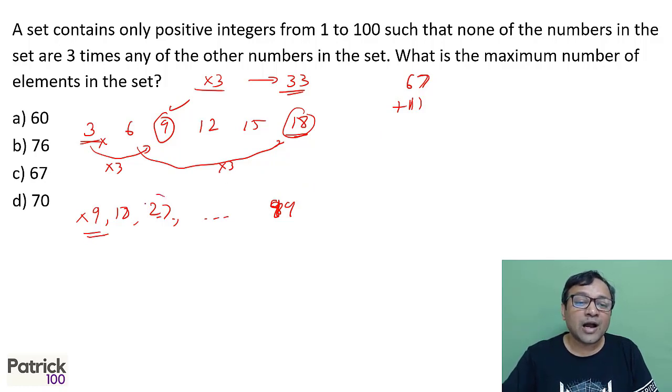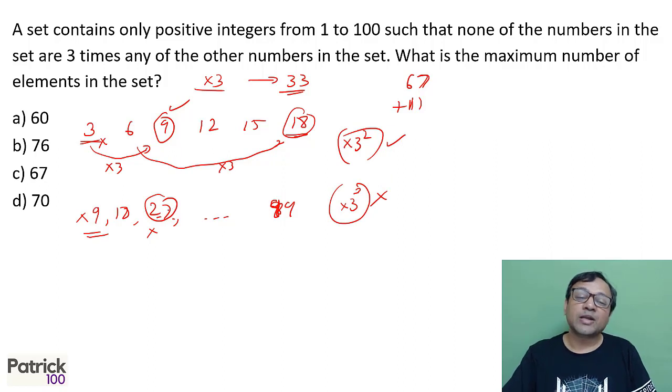If I include 9 I can't include 27. So here I have included all multiples of 3 squared. All multiples of 3 squared I have included. So now I have to exclude all multiples of 3 cubed. I have to exclude this, this I have to include. Because if 9 is there, 27 cannot be there. 18 is there, 54 cannot be there. So there are 3 such numbers. I have to remove those 3.